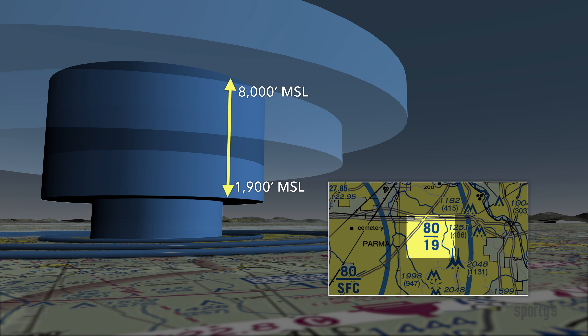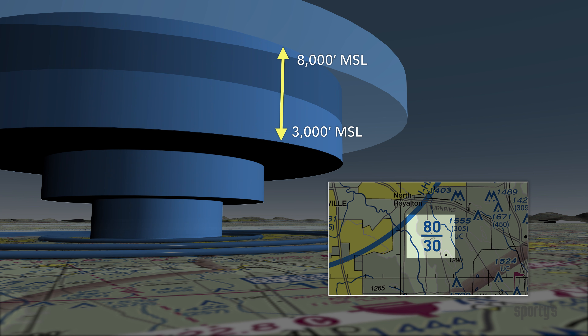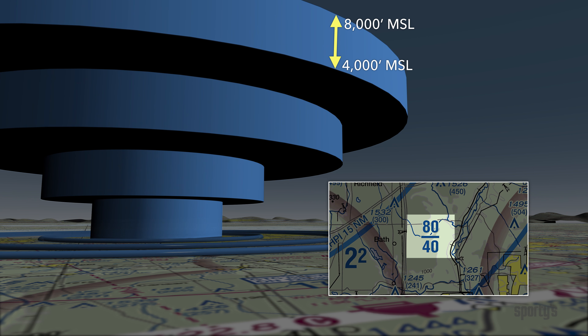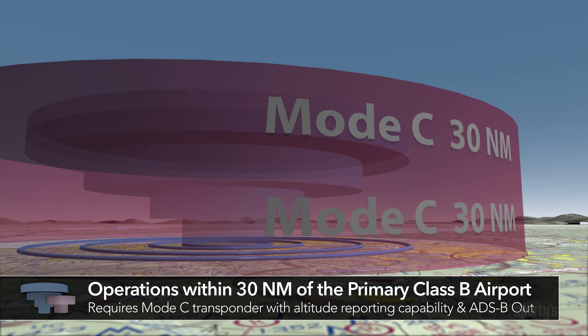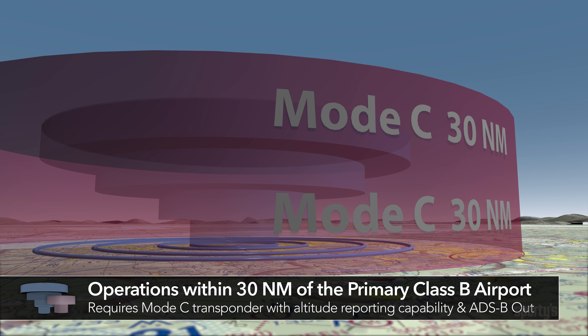The next layer starts at 1,900 feet MSL. The next layer at 3,000 feet MSL, and the outside layer begins at 4,000 feet MSL. Flying within 30 nautical miles of the primary airport, you must have an operating transponder and altitude reporting and ADS-B out capability if the aircraft was certified with an engine-driven electrical system and is not classified as a balloon or glider.